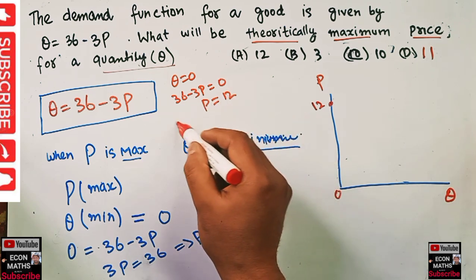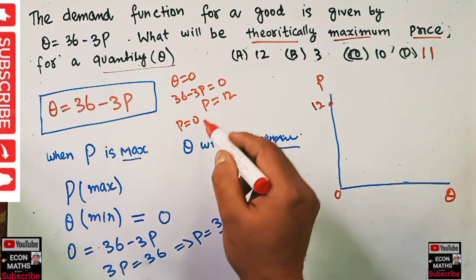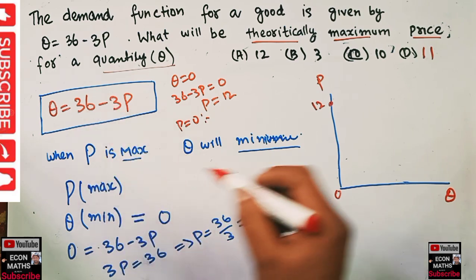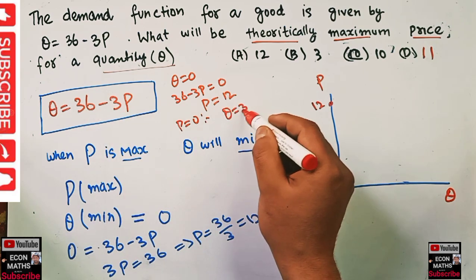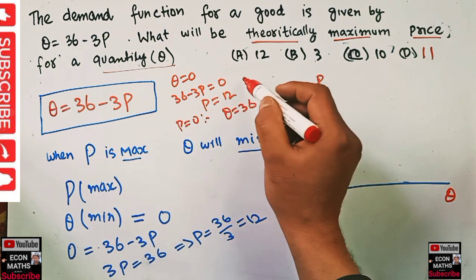If we want to draw the demand function, this time put P = 0 in this equation. When we put P = 0, we will get Q = 36. So we have two pointers.